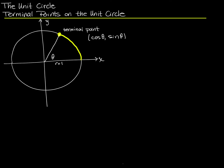There are four really important points you will use many times in your mathematical career. Since this is the unit circle with radius 1: the point at 0 has coordinates (1, 0); up top, the coordinates are (0, 1); on the left side, x is negative 1, y is zero; and down at the bottom, x is zero, y is negative 1. The corresponding angles are 0, pi over 2 which is 90 degrees, pi which is 180 degrees, and 3 pi over 2.